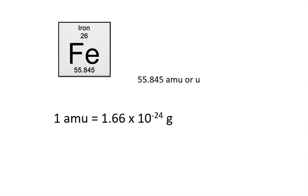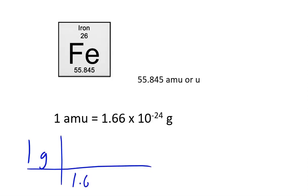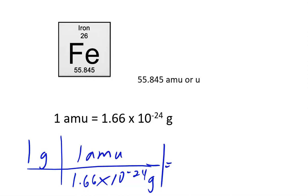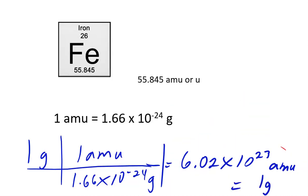One amu equals 1.66 times 10 to the minus 24 grams. Going the other way via dimensional analysis: how many amu equals one gram? Starting with one gram, dividing by 1.66 times 10 to the minus 24 grams per amu, the answer is 6.02 times 10 to the 23rd amu equals one gram.